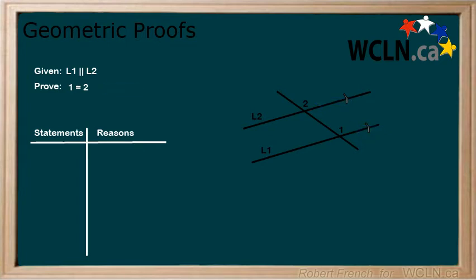Now for the proof part. Always start your proof with your given statement or statements. The idea is that you are starting with what you know and working towards what you need to prove. Here, we write that line one is parallel to line two under statement. For the reason, we write given, as we were given this statement as part of this proof.